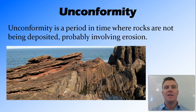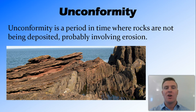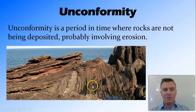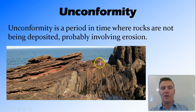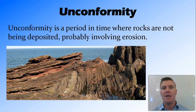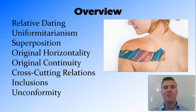The law of unconformity states that there are periods in time where rocks are not being deposited — probably involving erosion — meaning we don't know exactly what happened during that time. For example, here you can see a horizontal strata that has been flipped 90 degrees and is now running vertical, but we know it formed horizontally because of original horizontality. A new strata then formed over the top of it, and along this unconformity line something occurred — rocks were not being deposited and were probably being eroded away, giving us a gap in the geological record.